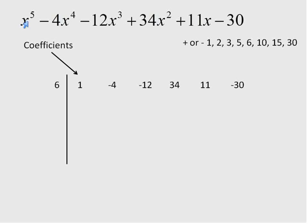And then on the right side of the line, we put the coefficients from our polynomial. So the coefficient of x to the power of 5 is 1, the coefficient of our second term is negative 4, negative 12, positive 34, positive 11, and then negative 30, our constant at the end. That's the setup for this. Now what we're going to do is follow these steps.